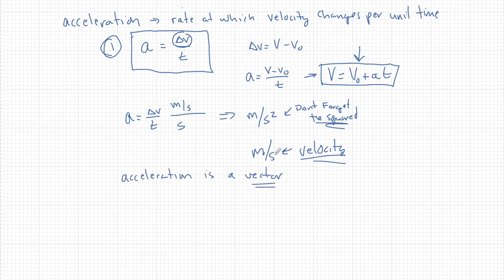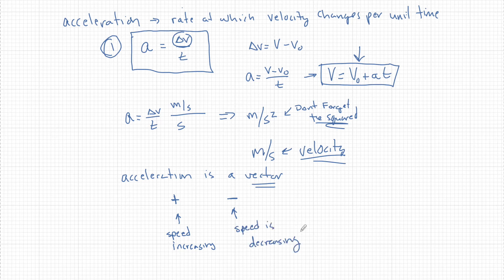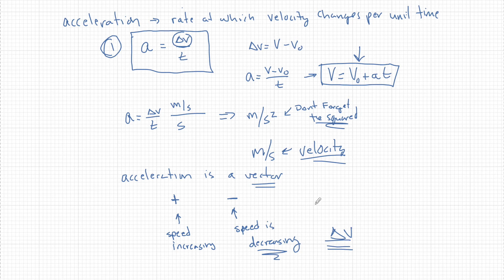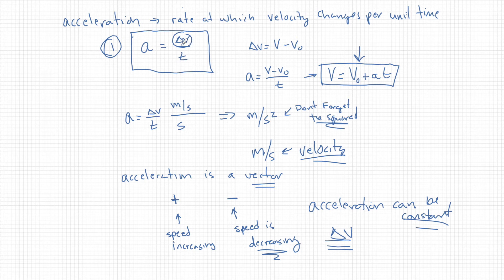Acceleration is a vector, so it has a direction associated with it. Most commonly, we say we have a positive acceleration or a negative acceleration. Positive generally means the speed is increasing, and negative generally means the speed is decreasing. I tell my students: if the acceleration helps velocity, it's positive; if it hurts velocity — decreases it, slows it down — it's negative. Acceleration can be constant, which can be a little counterintuitive. If the change of velocity is zero, then acceleration has to be zero. But a can be a constant number while v is changing.